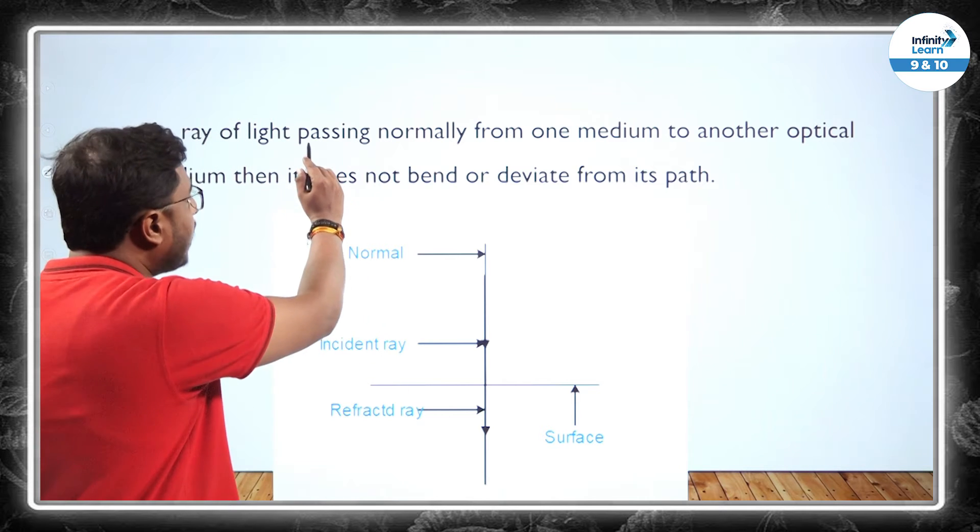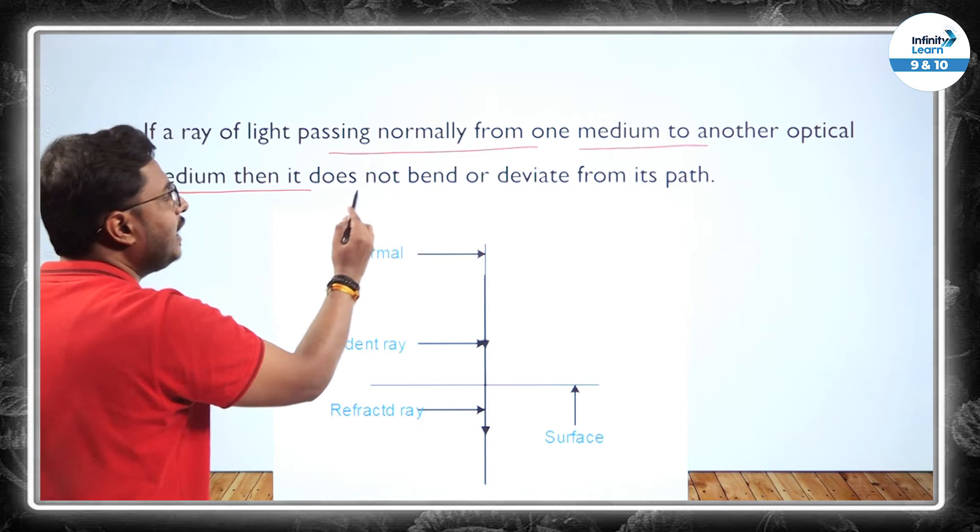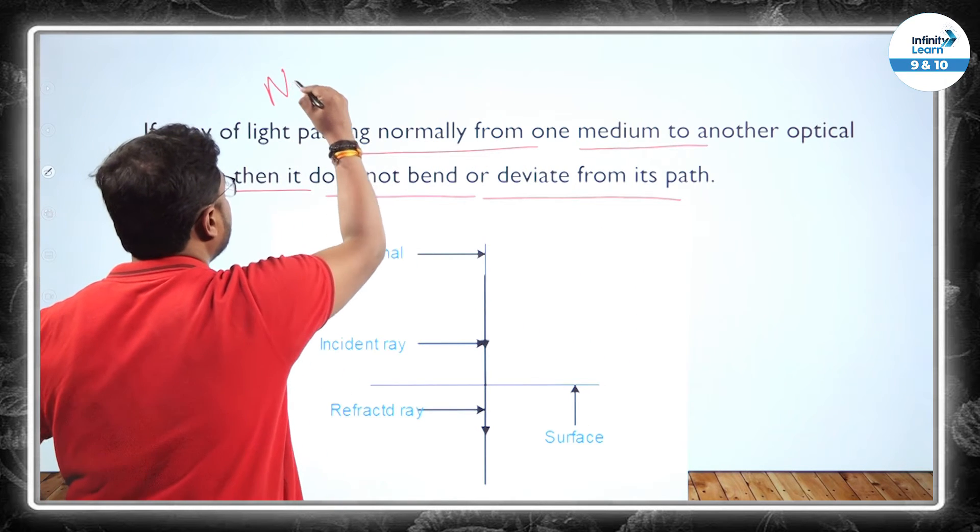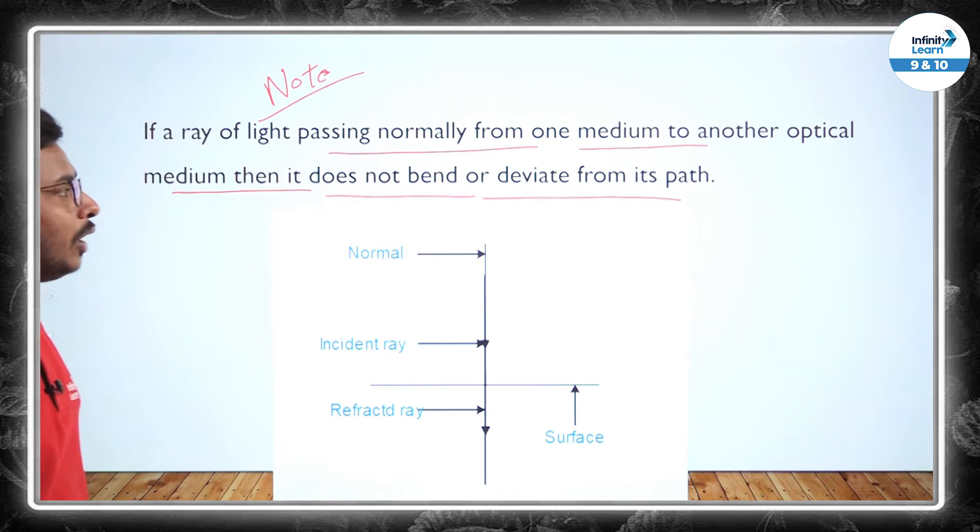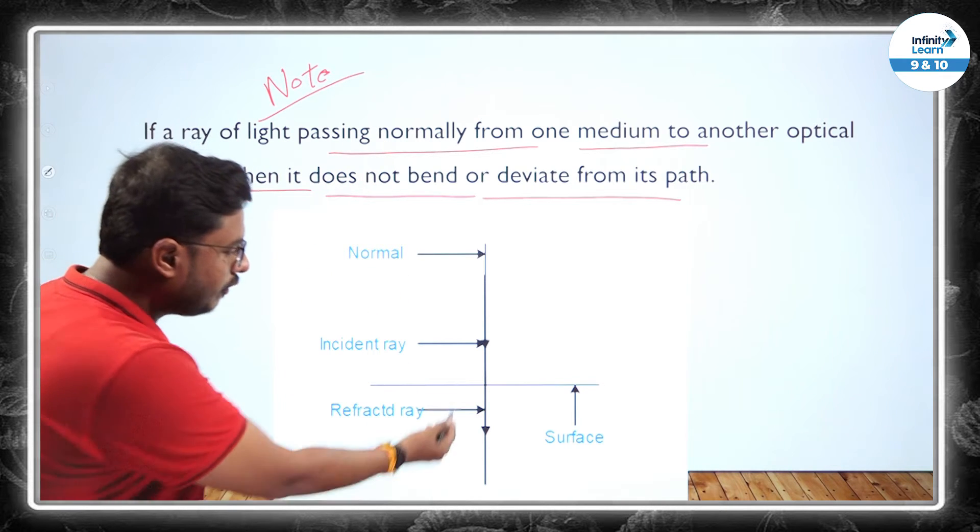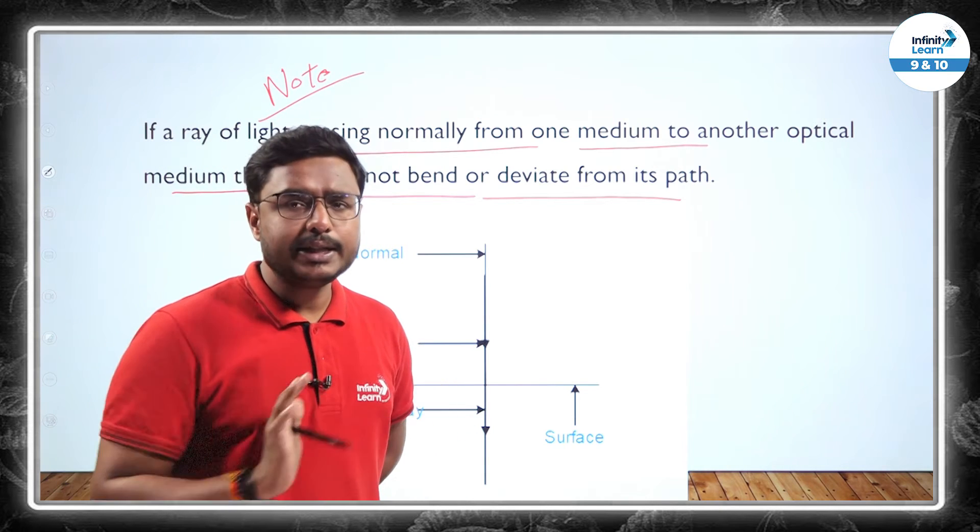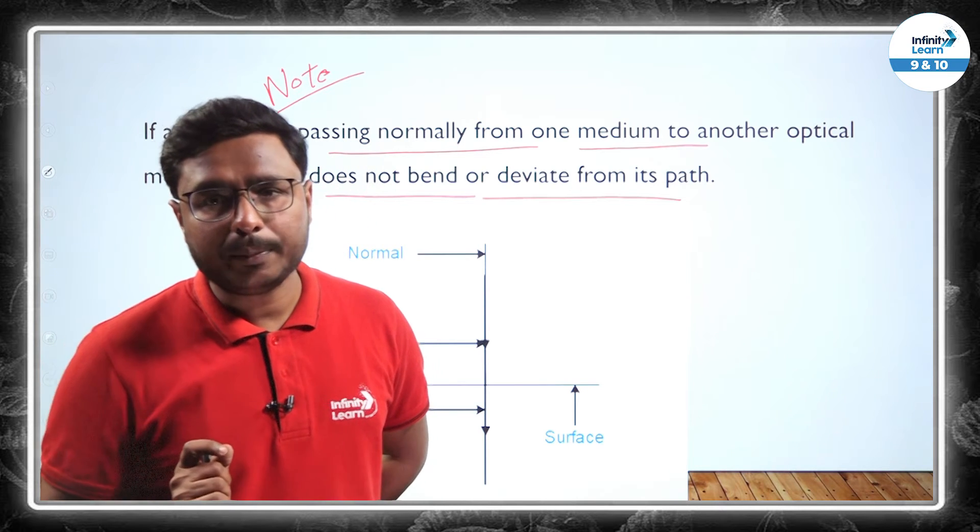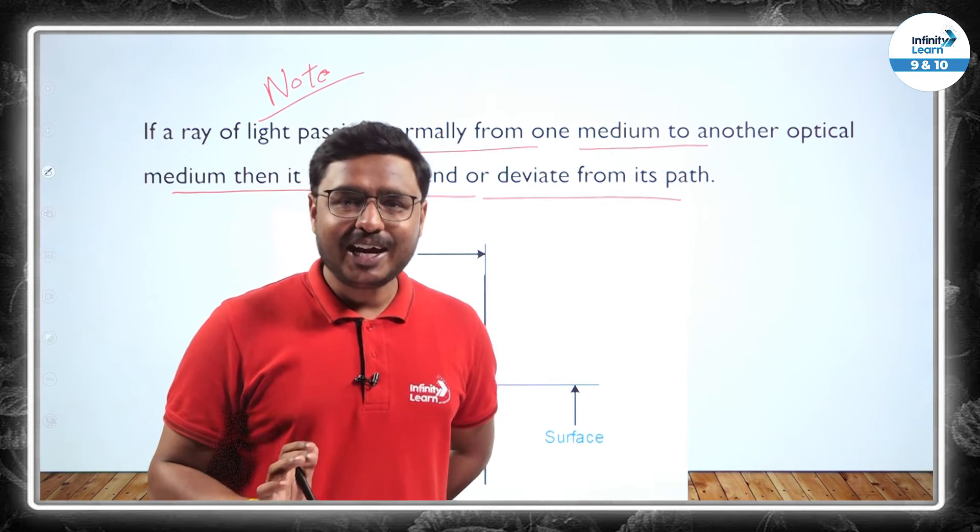So if a ray of light passing normally from one medium to another optical medium, then it does not bend or deviate from its path. Important note. So when it is falling normally in between the two mediums, so there will be no refraction, there will be no change in path. Easy point.